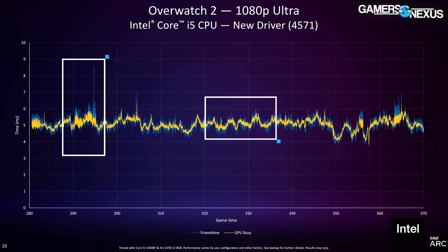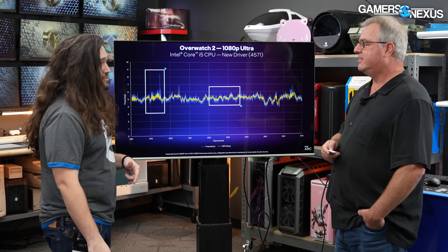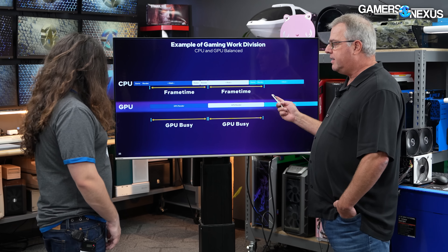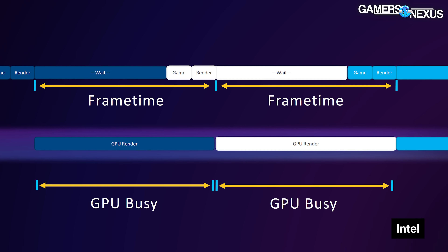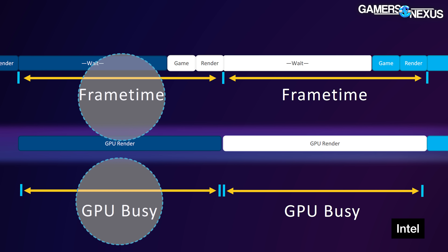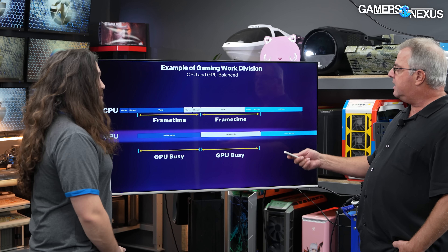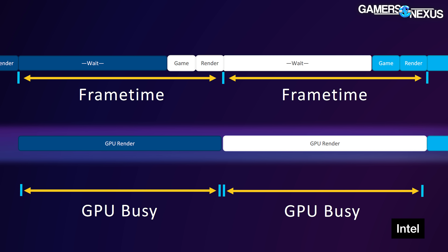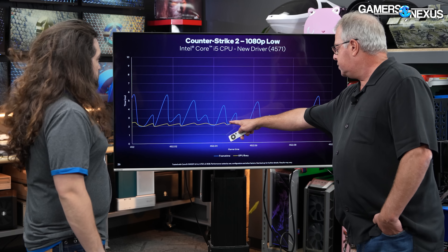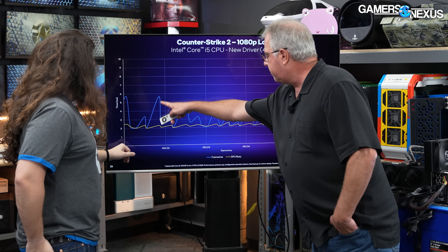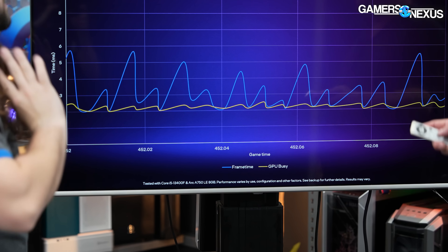Where do you see this going? Originally the primary metric was just average FPS, sometimes image quality, and then eventually frame times came into the discussion in a big way — PC Perspective and Tech Report were front-running a lot of that. Do you see the direction you're going with this becoming the next step on that? Honestly I'm not sure. I think we're going to find a lot of interesting things here and it's going to expose some inefficiencies. There's going to be some pain, some people are going to get embarrassed, but I think it's going to make us all better and smarter and better appreciators of the technology.